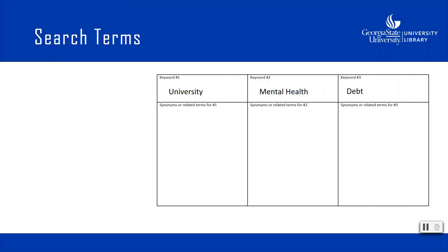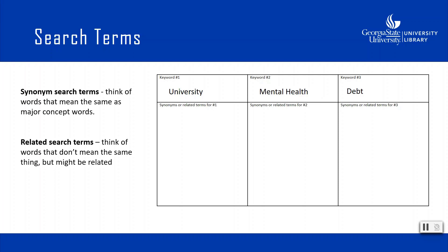Now let's talk about search terms. While you will likely start your search with key concepts from your research idea, it's good to also think about synonyms and related words. Synonyms are words that mean the same as major concept words. Related search terms are words that don't mean the same thing but might be related or closely connected. Depending on the audience or creator of the information, certain terms may be used over others — this is why it's important to consider all possible vocabulary options. If you need help thinking of synonyms, I recommend using thesaurus.com.